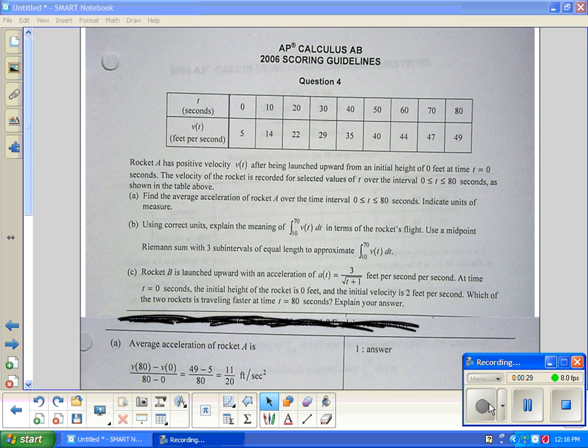Find the average acceleration of the rocket over the time interval zero to eighty. That's just, think about it, that is simply doing V sub eighty minus V sub zero divided by the time.